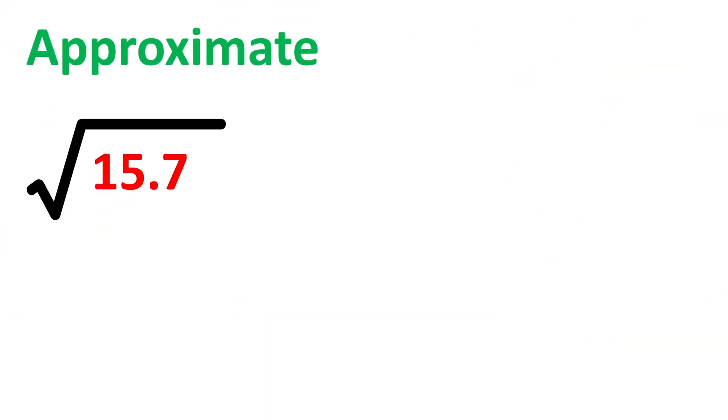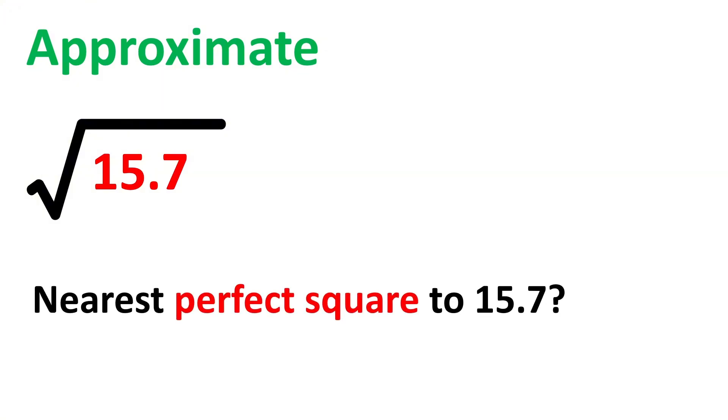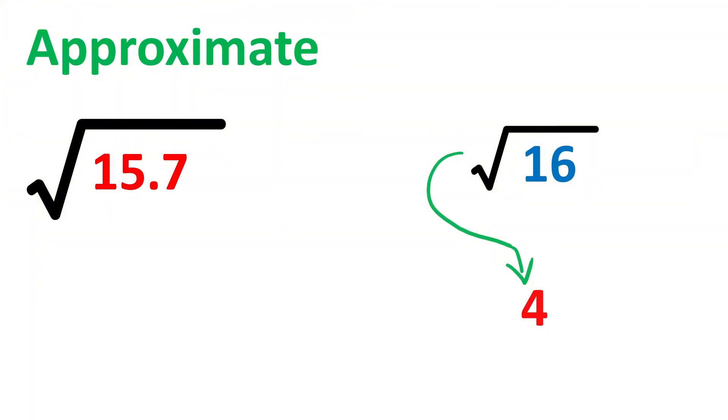We start with a nearby value whose square root we know. What is the nearest perfect square to 15.7? It is 16, right? And we know that the square root of 16 is 4.